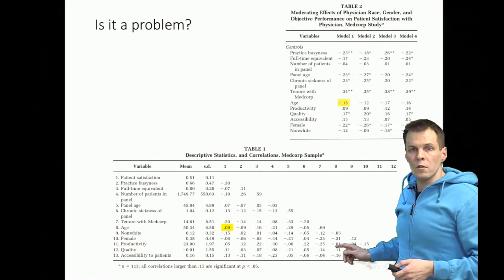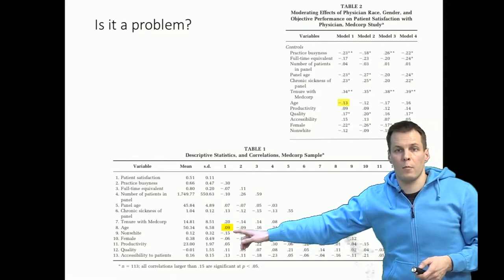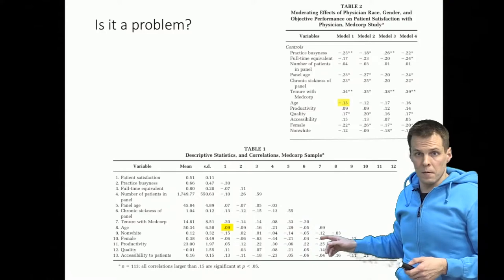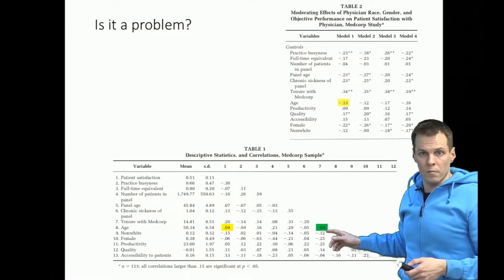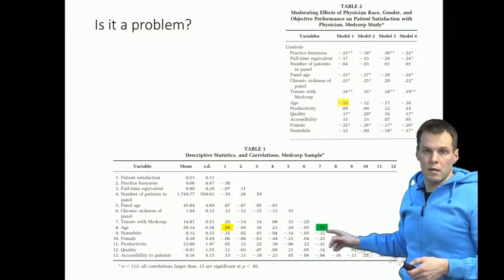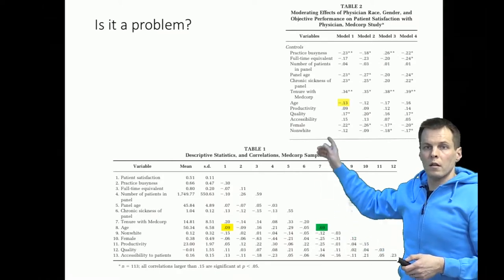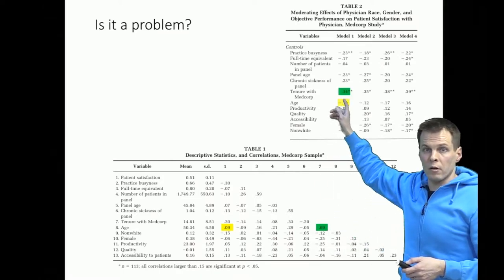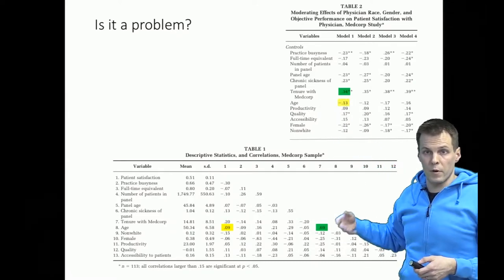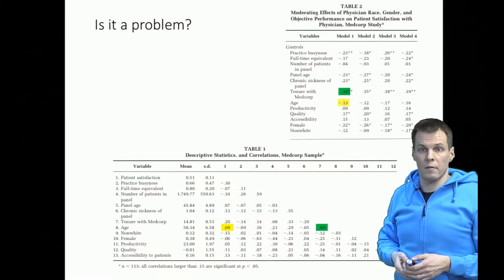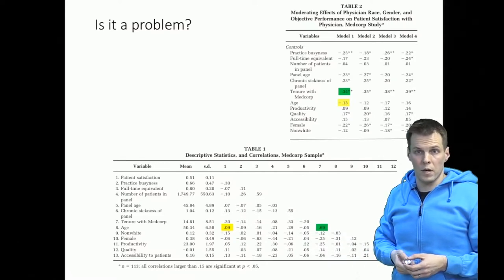We first look at which variables are highly correlated with age. Well, it's the tenure. So tenure is correlated with age at a very high level. Then we look at what's the correlation coefficient of tenure here. It's very strong positive. So the more experience you have, the more satisfied your patients are.